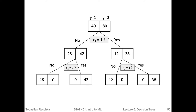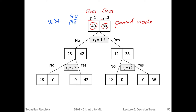To illustrate, we have this simple toy dataset and a simple decision tree. The parent node here has 40 examples from class one and 80 examples from class zero. If we compute the class proportions: 40 out of 120 is approximately 33.3% for class one, and 80 over 120 is approximately 66.6% for class zero.